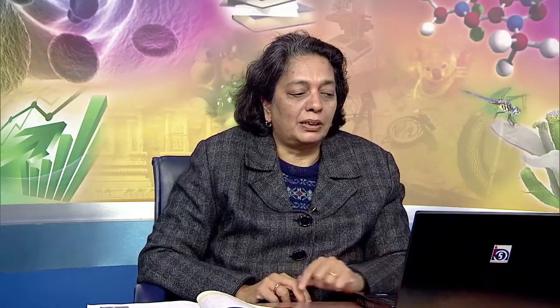Coming to Elephanta cave, this is the Maheshamurti — the three forms of Shiva, sometimes also described as Brahma, Vishnu and Mahesh, but iconographically these represent the three forms of Shiva to whom the cave is dedicated. You can look at how the details have been worked out in these reliefs.